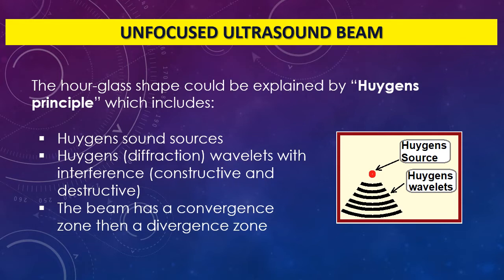An Austrian scientist named Huygens postulated that there are multiple Huygens sources present within the transducer element, emitting wavelets called Huygens wavelets. These wavelets interfere with each other in the form of in-phase and out-of-phase interactions, making constructive and destructive interference, resulting in this hourglass-shaped ultrasound beam. It has a focus, and in the near zone there is convergence, while in the far zone there is divergence.